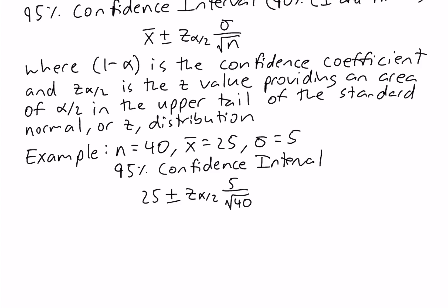The first step to finding z alpha/2: we set 1 minus alpha equal to the confidence coefficient, which is the decimal form of the confidence level 95%, so it's 0.95. From here, we want to solve for alpha/2. We get alpha equals 0.05, then dividing by 2 on each side, we get 0.025. So our alpha/2 is 0.025, and our z alpha/2 is the z value with an area of 0.025 to the right.